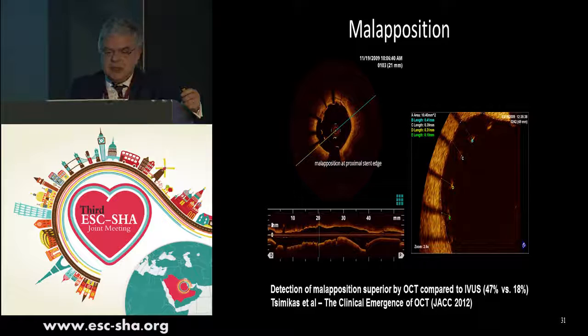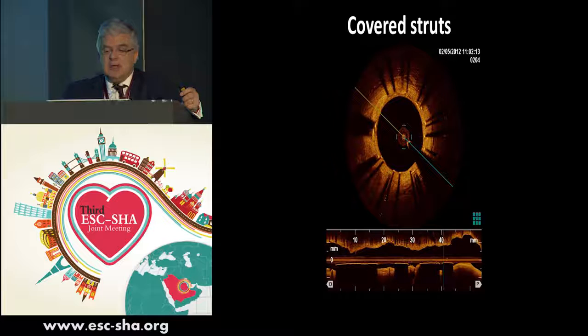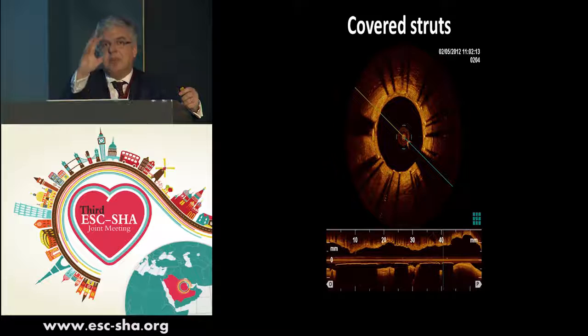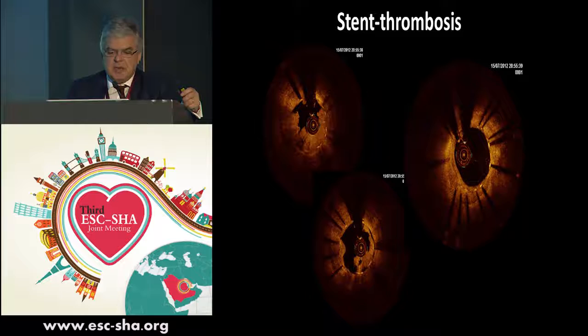This is an example of malapposition, and you can detect it very nicely. Look at the distance between the strut and the vessel wall — there is a clear gap, making it very easy to see this level of malapposition, as we saw in the previous example. Here we can see the result after some time of covered struts, and it is very nice to demonstrate how the covering of these struts progresses. This was actually the technique that made it possible to see the natural history of strut coverage. You can see covered struts here and uncovered struts here, and also demonstrate the presence of stent thrombosis, as in this example.